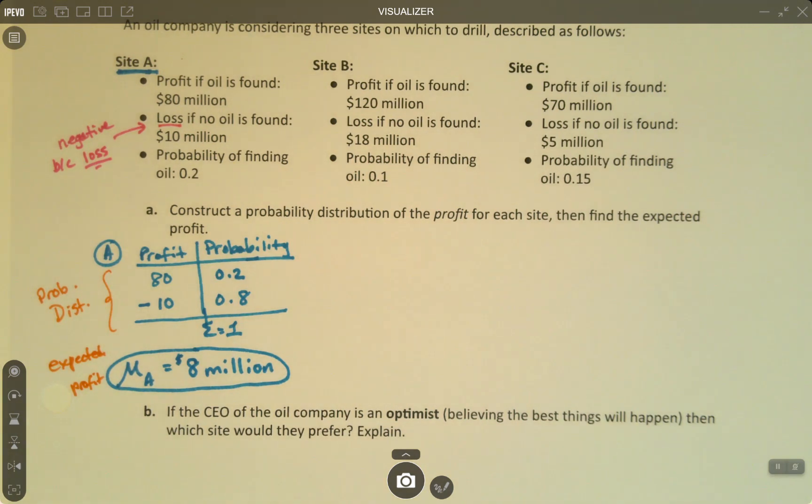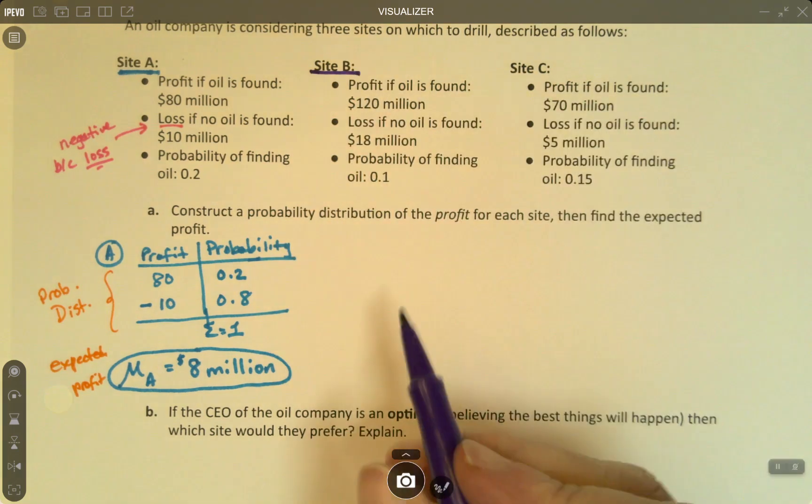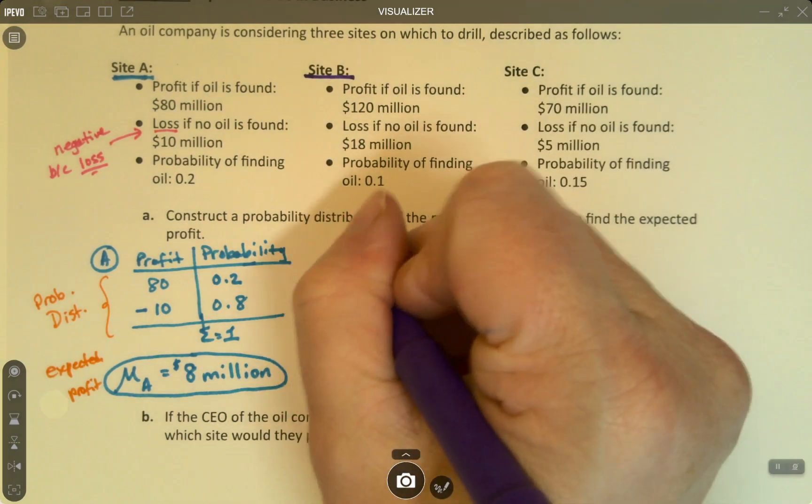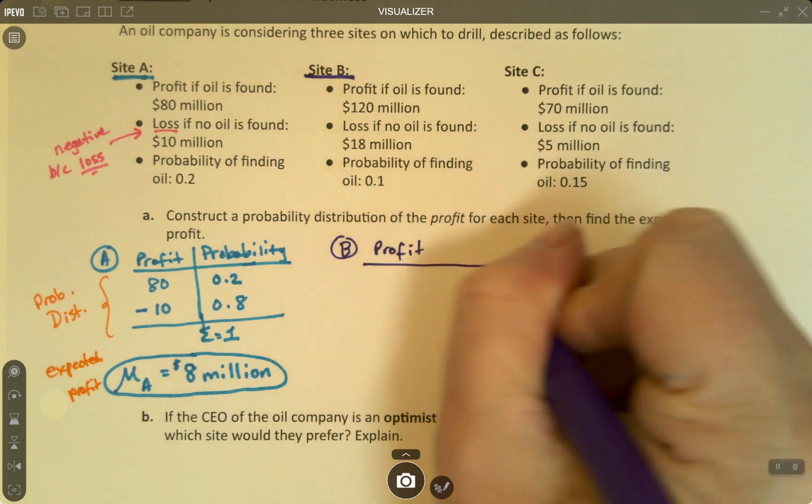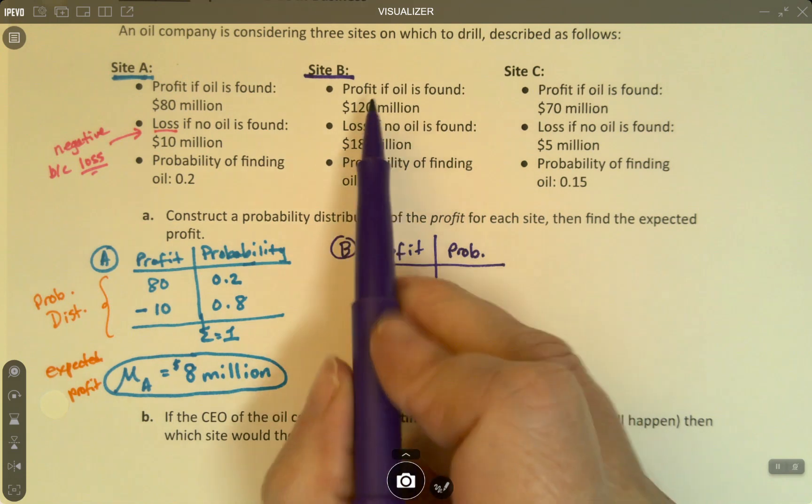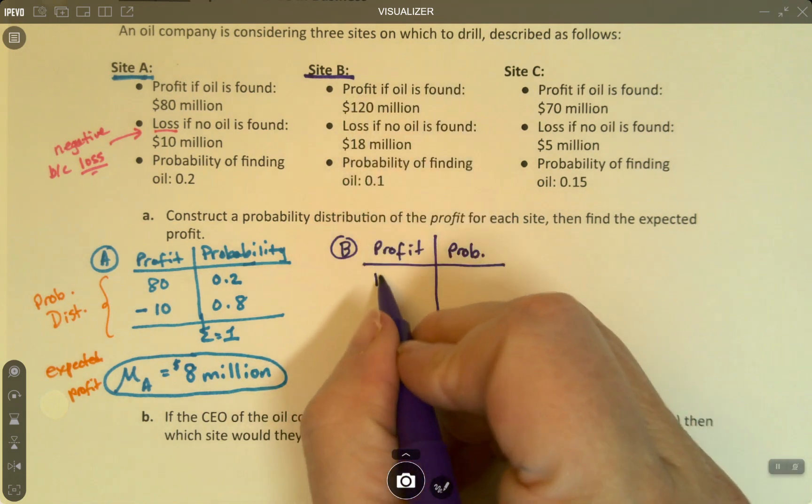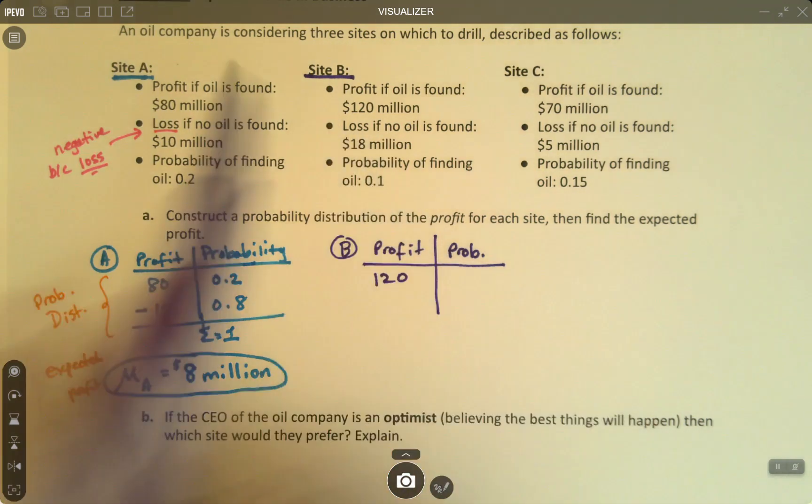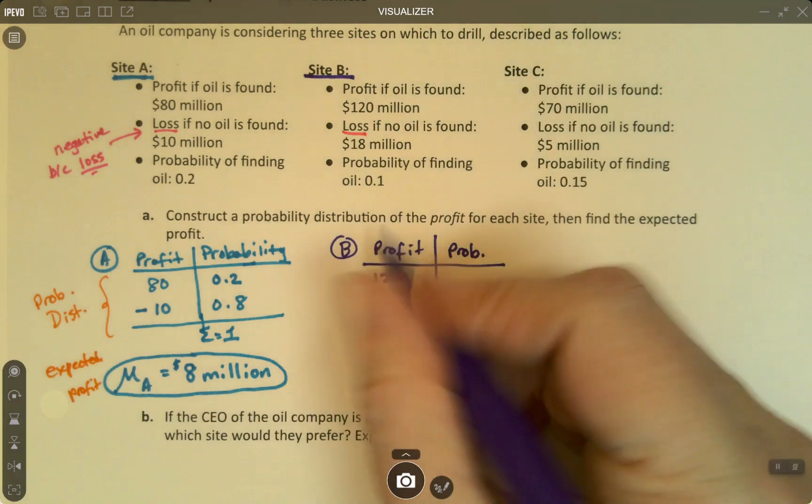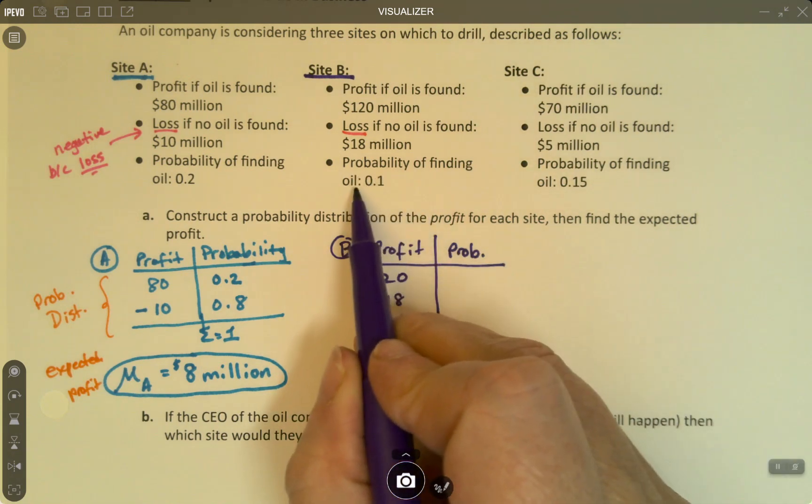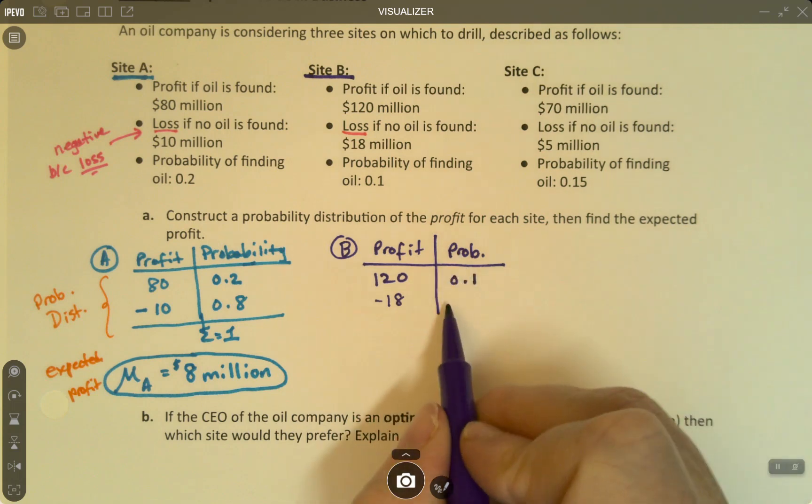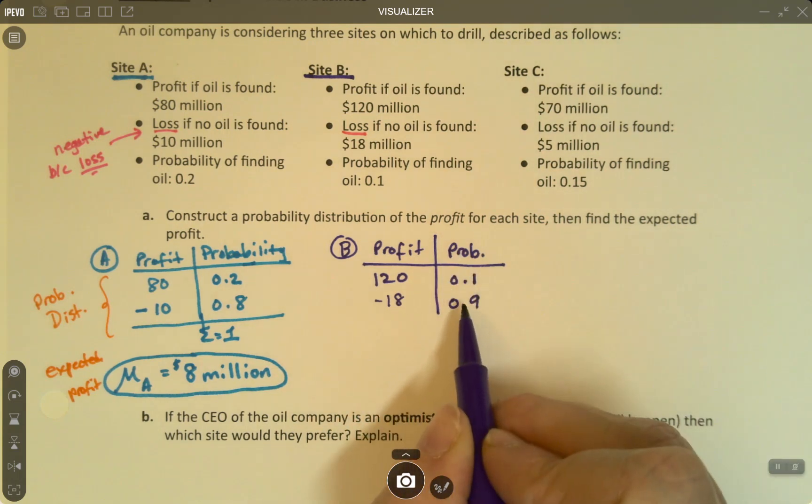All right, let's move on to site B, shall we? So site B, let's make a probability distribution for B. So we need profit, and we need probability. All right, if oil is found, we're going for 120 million. So 120 million, and then the loss, again, that's a loss. So that's negative. So it's going to be negative 18. The chances of finding oil and hitting it big is 0.1. So this has to be 0.9, because they have to add up to 1 in order to make this valid. They're complements of each other.